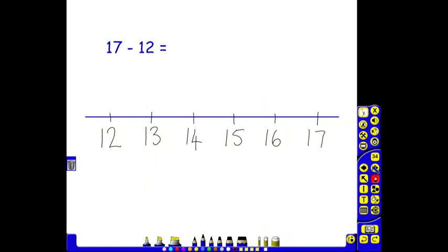When we have 17 take away 12, or a number sentence like that, instead of jumping back 12, the children would be encouraged to plot those two numbers on a number line and find the difference, because when we take away, we are ultimately looking for the difference between those two numbers. So onto a number line, they would plot their smallest number at the start, which is 12, and their largest number at the end, which is 17.